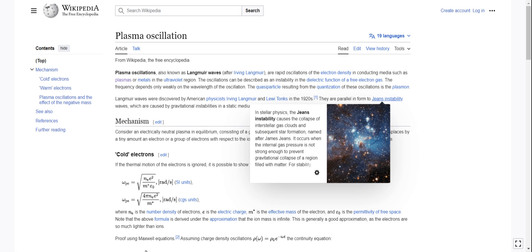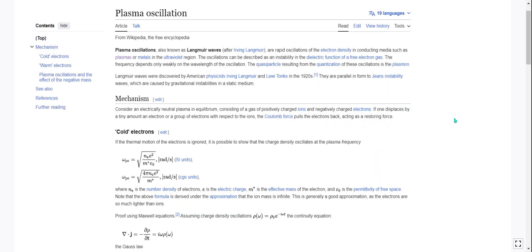Jeans instability, I know something of that. Jeans instability causes the collapse of interstellar gas clouds and subsequent star formation, named after James Jeans. It occurs when the internal gas pressure is not strong enough to prevent gravitational collapse of a region filled with matter.